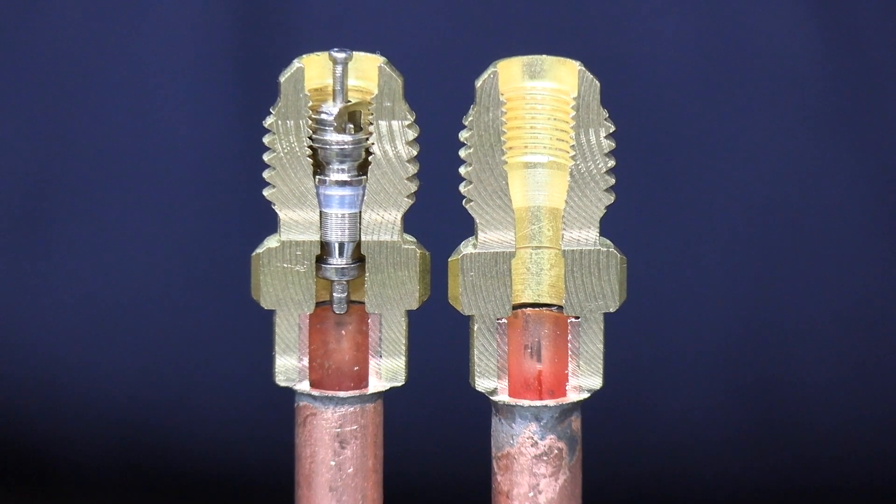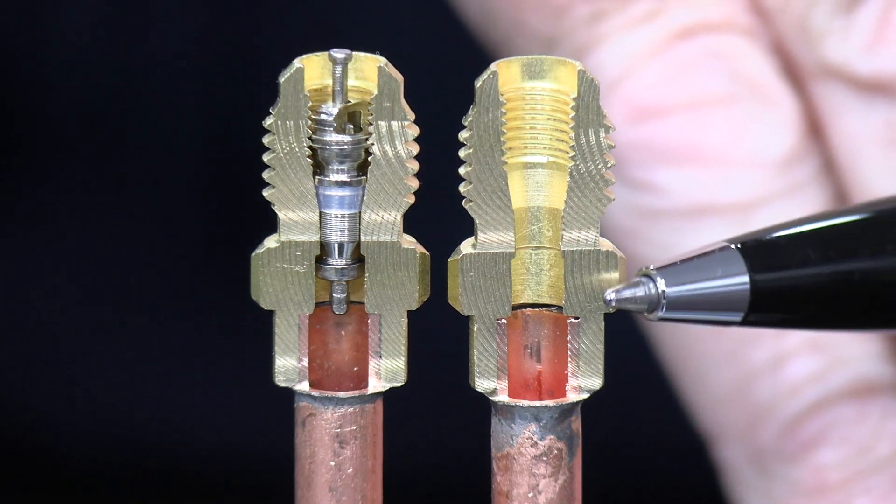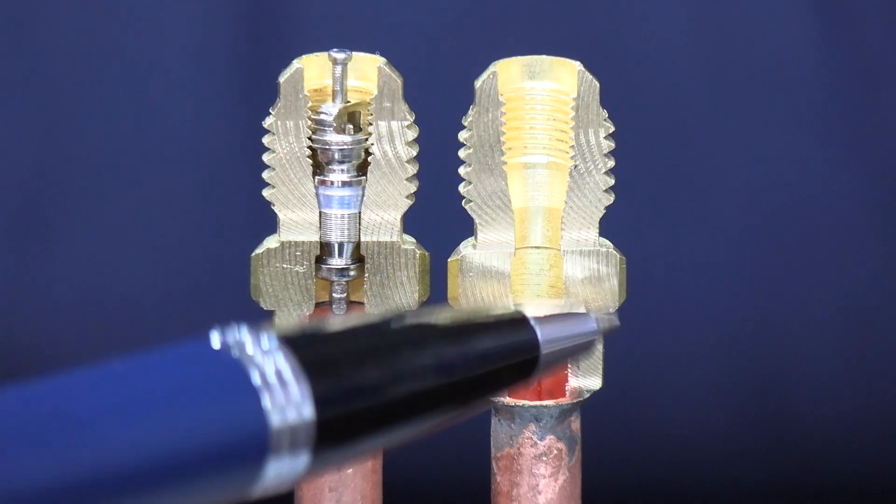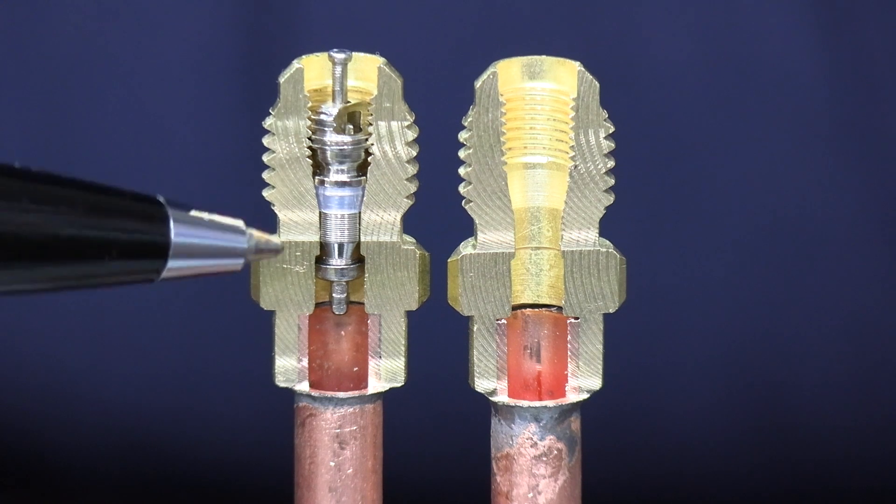So it goes without saying on this side of the video we've got the Schrader core removed. You can see you've got full flow running through. Absolutely no problem at all. Now on the other side, the Schrader core is fitted as it normally would be.